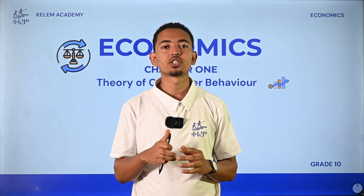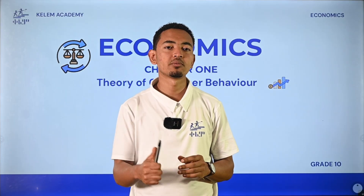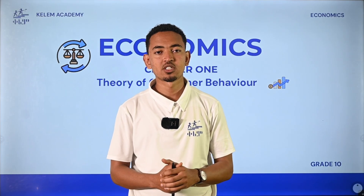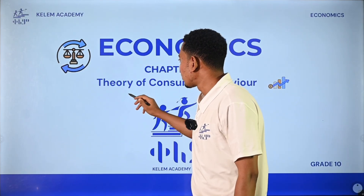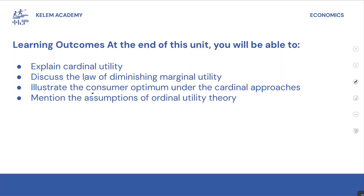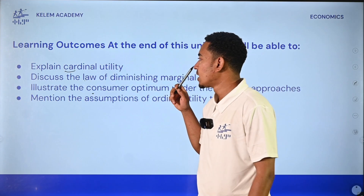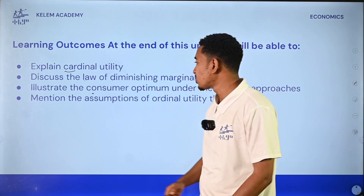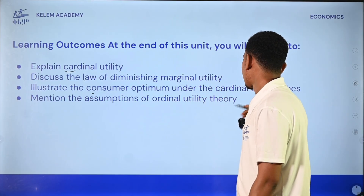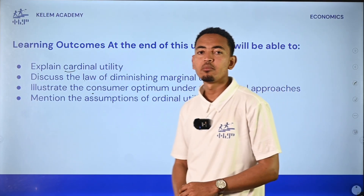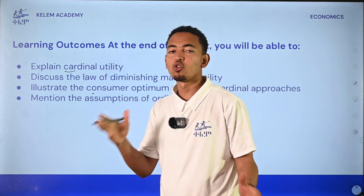What you want to talk about is the economics of research and economics, the economics of economics, and UNIT 1. If you have a learning curve, you can explain the cardinal utility and law of diminishing marginal utility. You can illustrate the consumer optimum under the cardinal approach. You can measure the ordinal theory and the cardinal utility theory.